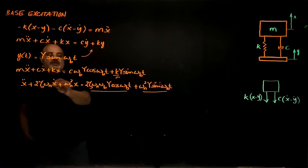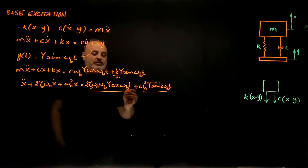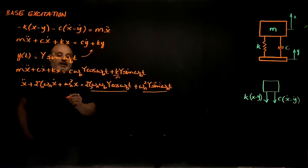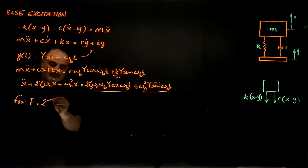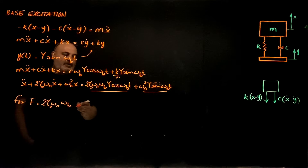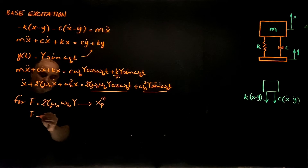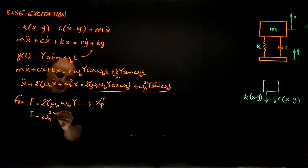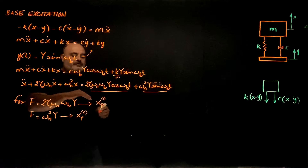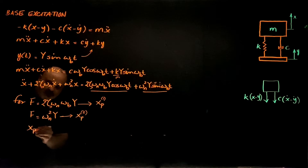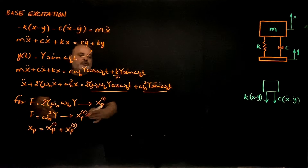Since this is a linear system, I can use the principle of superposition: solve the problem for the first forcing term and get particular solution xp1, and solve for another particular solution xp2 for the second forcing term ω_n²·Y. The total particular solution xp will be xp1 plus xp2 — that's the principle of superposition for linear systems.